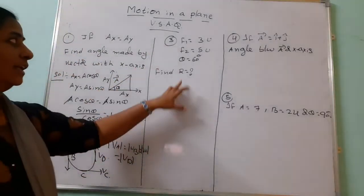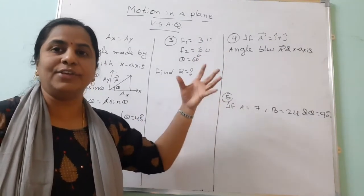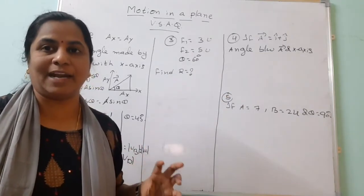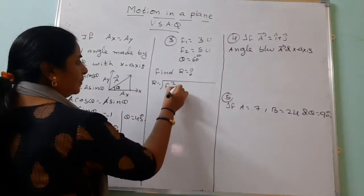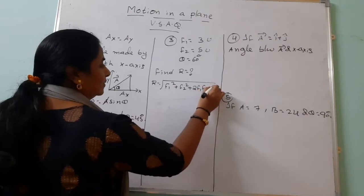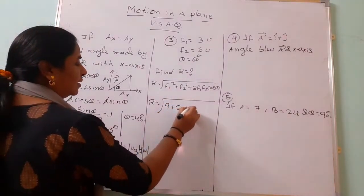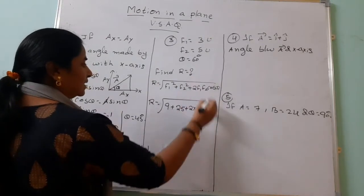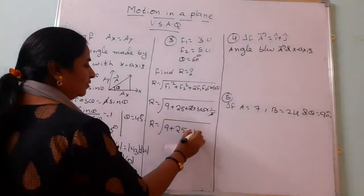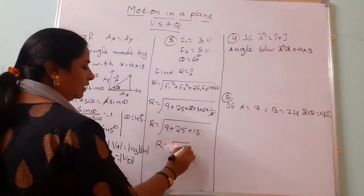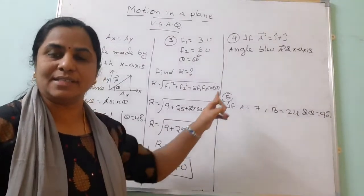The third VSAQ: two forces of 3 units and 5 units act at 60 degrees to each other. Find the resultant using the parallelogram law: R = √(F₁² + F₂² + 2F₁F₂ cos θ) = √(9 + 25 + 2×3×5×cos 60°) = √(9 + 25 + 15) = √49 = 7 units.